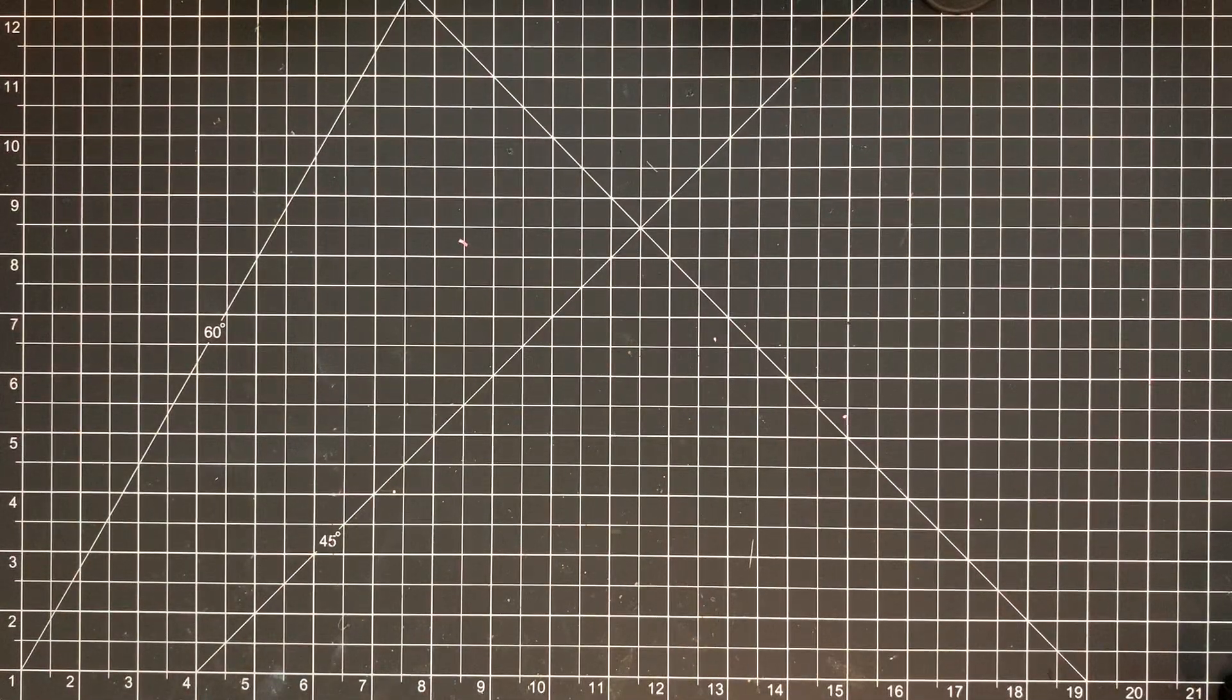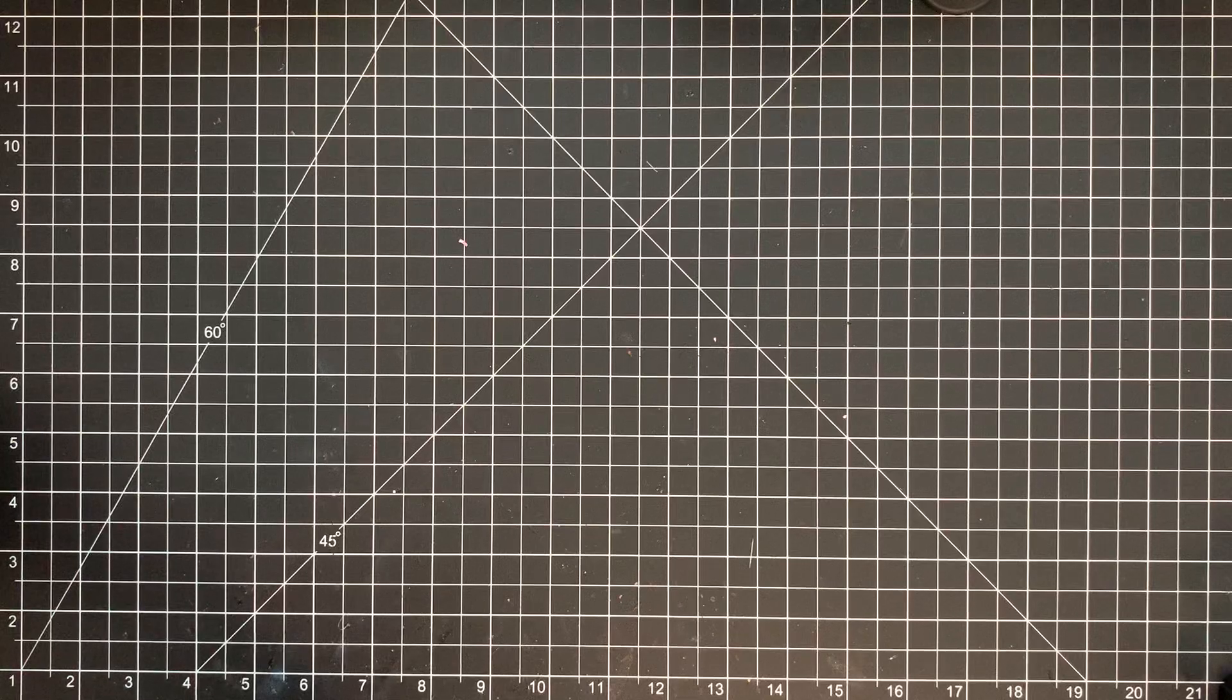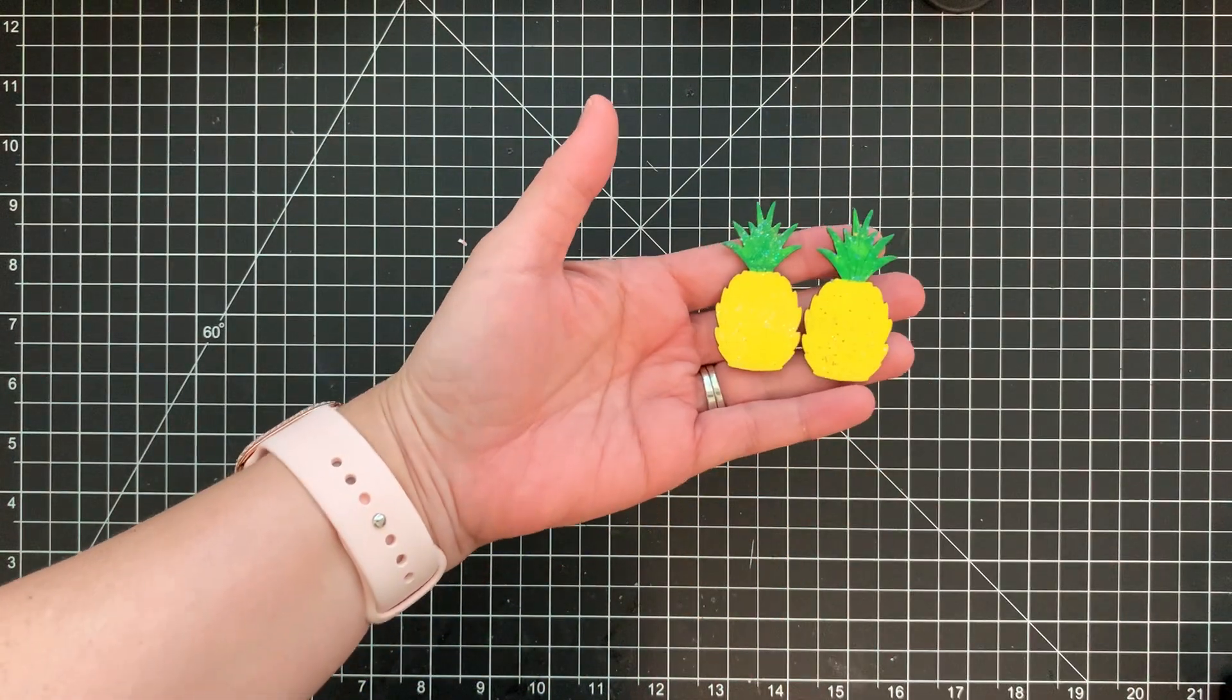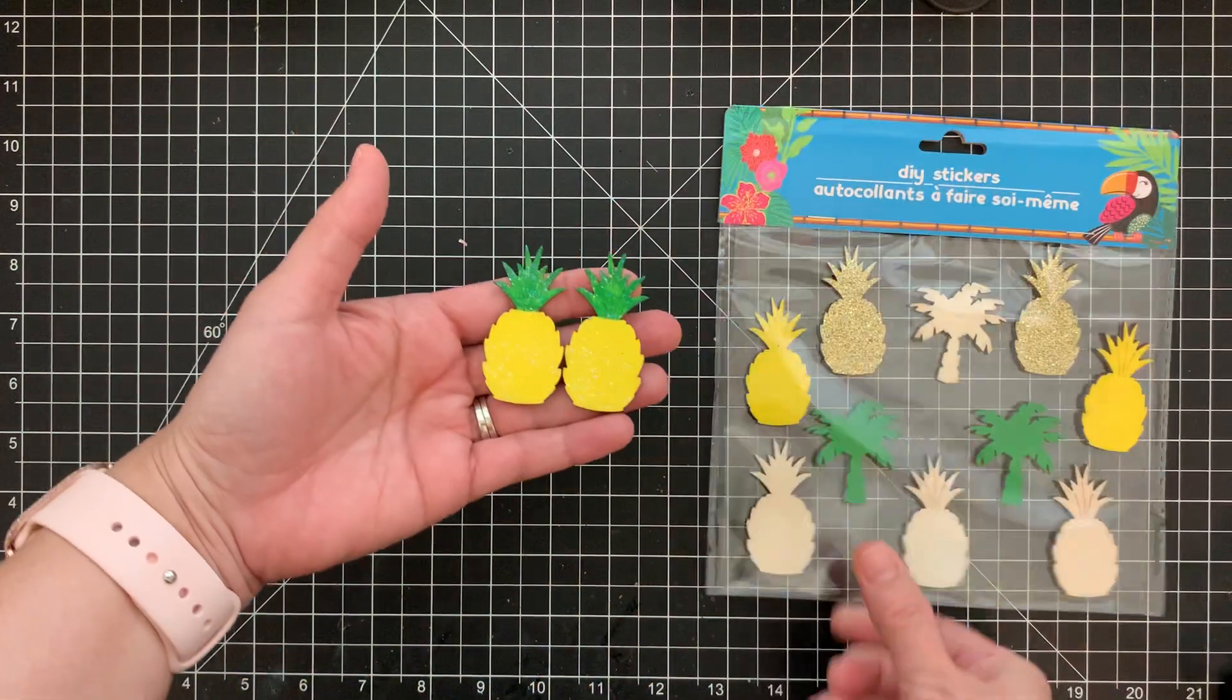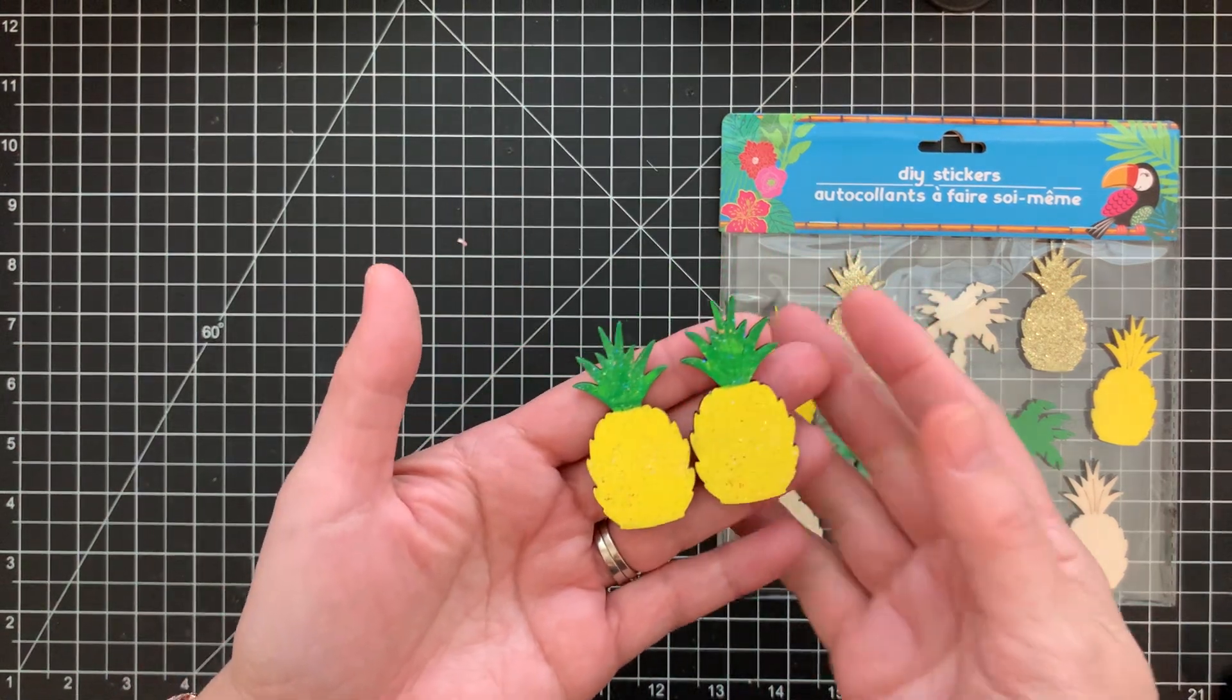First off, I went ahead and painted some of mine. So for the ones that were already painted yellow, I went ahead and did this. I painted the top green. So this is from this pack here. You see how they were yellow and the yellow just looked too plain to me.